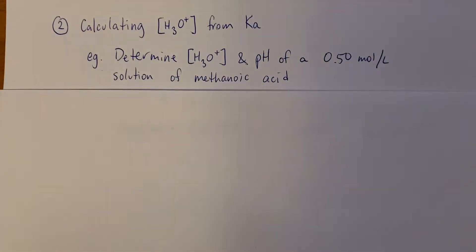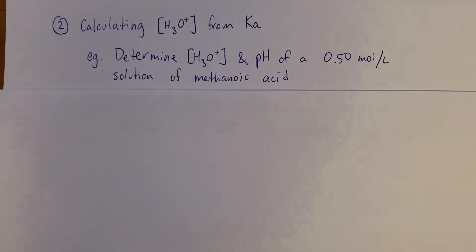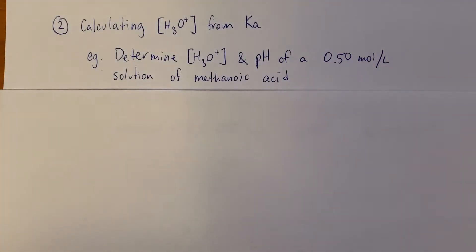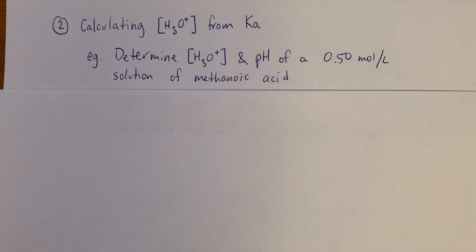So it's calculating pH, or just the hydronium concentration, from a Ka value. All right, so I've got a real simple example here. We're going to determine the hydronium concentration and pH of a 0.50 mol/L solution of methanoic acid.